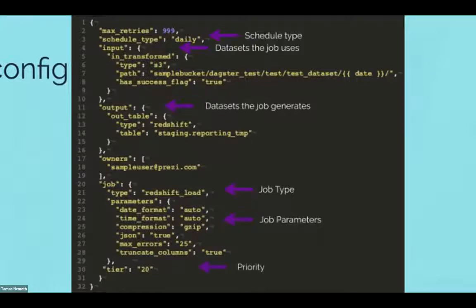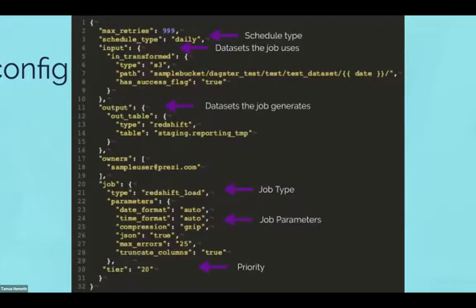We also defined tiers, so every dataset is put into some kind of tier, which is essentially a priority. If you have hundreds of datasets and hundreds of ETL jobs, it can happen that two jobs want to run at the same time on the same resource. You have to make sure the more important datasets will be ready earlier. The lower the tier, the earlier the jobs will be scheduled if possible. The job type also defines the resource to be used, and we had resource queues to make sure you can't overload the resources a job is using.